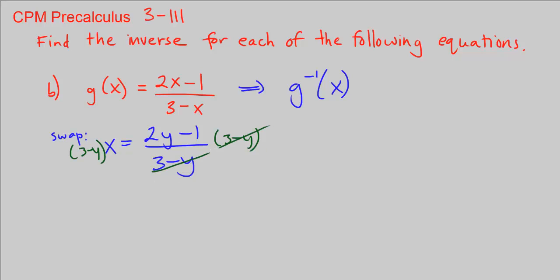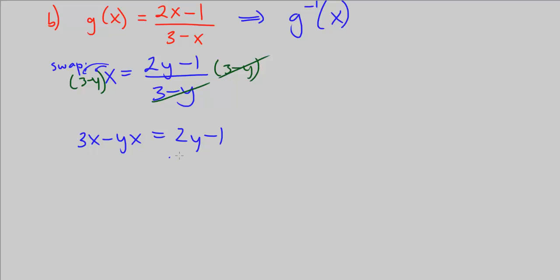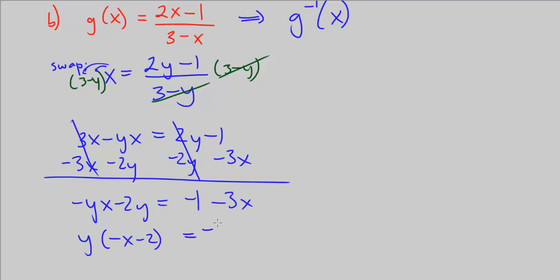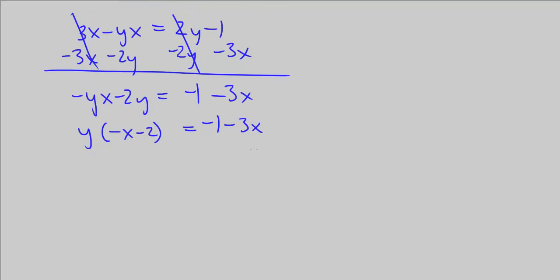These cancel out here on the right. On the left, then we have 3. Let's distribute the x. So we have 3x minus yx equals 2y minus 1. Let's get the y's on the same side of the equation. So let's subtract 2y from both sides and subtract 3x from both sides as well. These cancel, these cancel. We're left with negative yx minus 2y is equal to negative 1 minus 3x. Let's factor out a y from this, so we're left with y times negative x minus 2 equals negative 1 minus 3x. Divide both sides by negative x minus 2, and we have our inverse function.